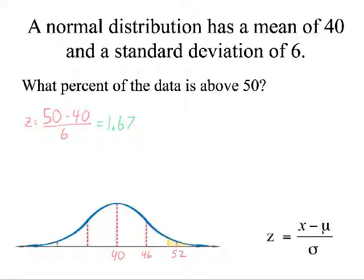So, when I do that, the table is going to give me 0.9525, which is equal to 95.25%.